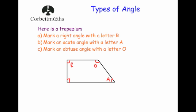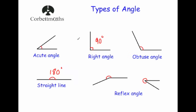So that's the different types of angles. To recap: acute is bigger than zero but less than 90. A right angle is your 90 degree angle, shown with the little box. An obtuse angle is bigger than 90 but less than 180 degrees. A straight line is 180 degrees. And a reflex angle is bigger than 180 degrees but less than 360.